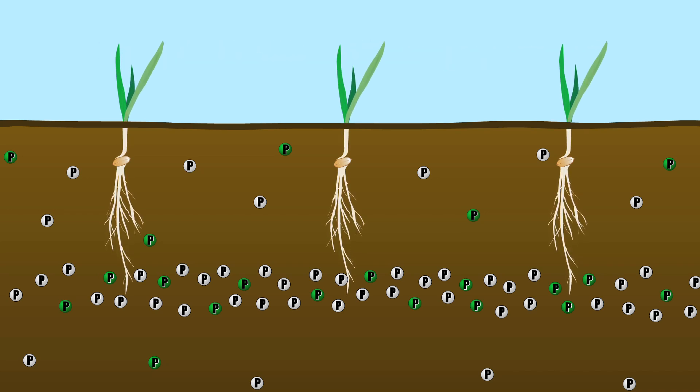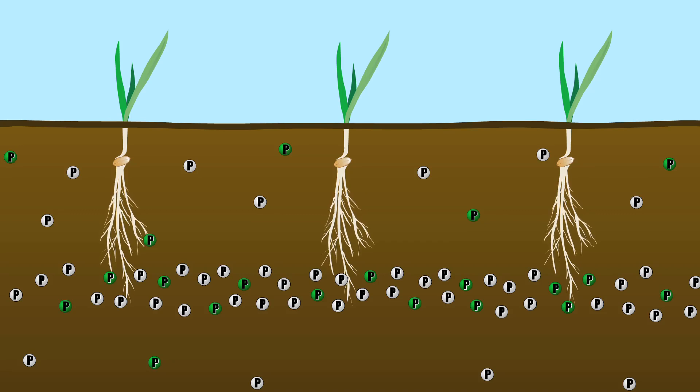Phosphate is not mobile in the soil. Plant roots have to grow to it and virtually touch the granule before the plant can absorb phosphate.